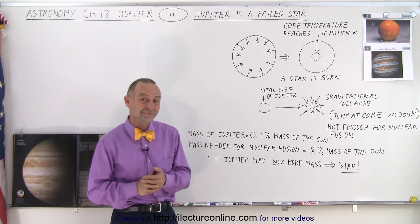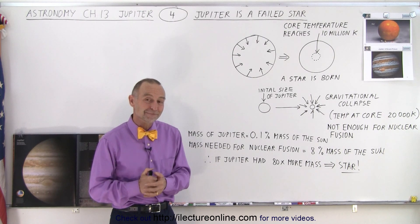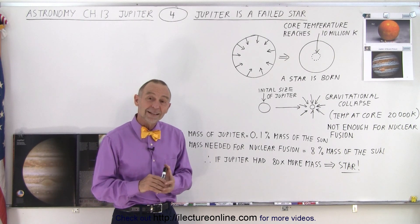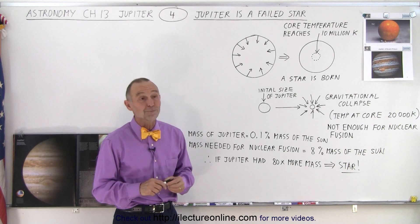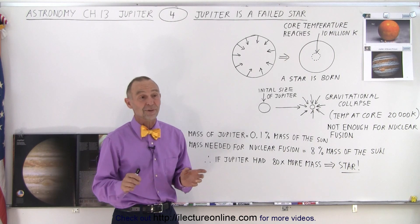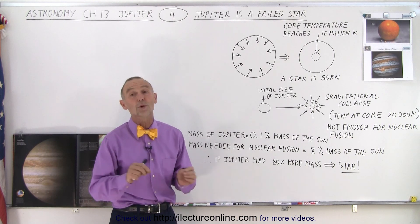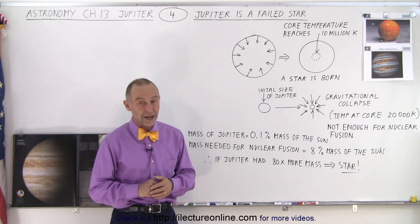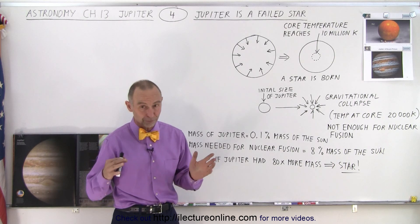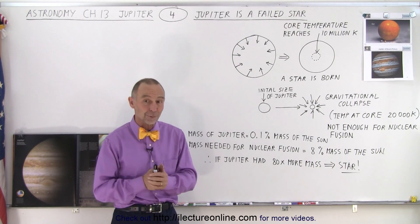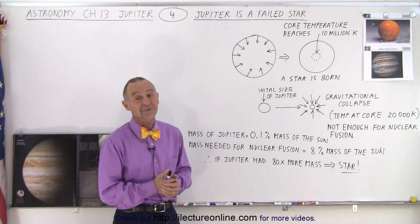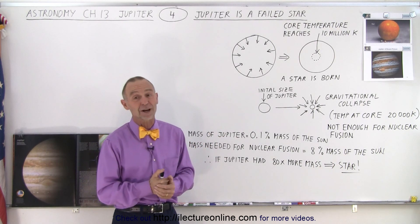Do most solar systems have two stars? Yes, most solar systems have two or more stars. Binary star systems are very common; there are plenty that have three or four. It's definitely common.